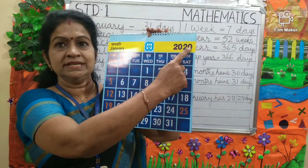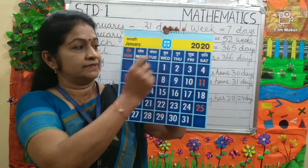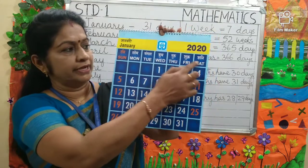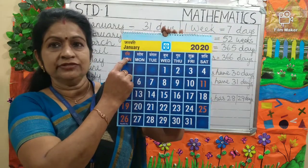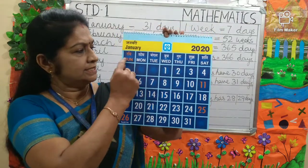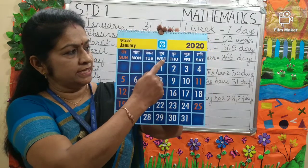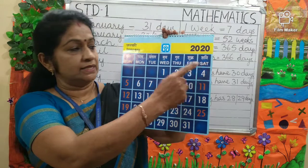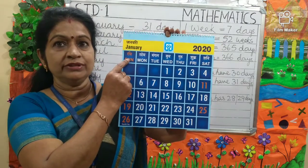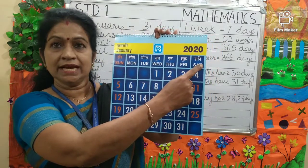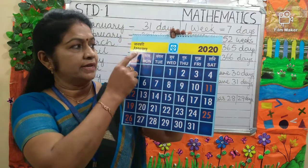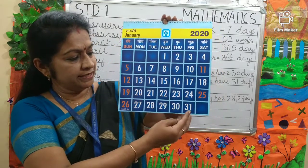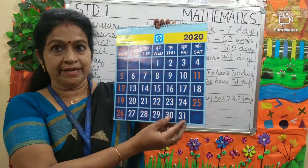This year is 2020. Here are the days of the week: Sunday, Monday, Tuesday, Wednesday, Thursday, Friday and Saturday. Sunday is the first day of the week and Saturday is the last day of the week. This month, January, has 31 days.